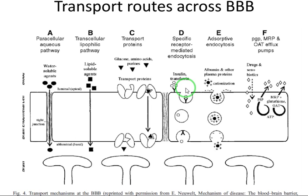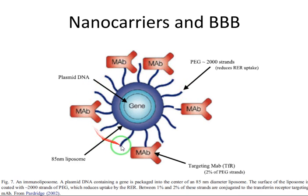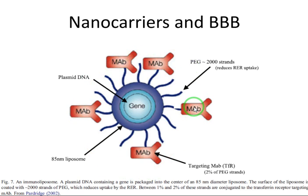Now let's see how this works for nanoparticles. Here we have a nanoparticle that has been equipped with monoclonal antibodies. These monoclonal antibodies have affinity towards the transferrin receptors expressed on the surface of the endothelial cells, and they help the nanoparticle undergo transcytosis and cross the blood-brain barrier.